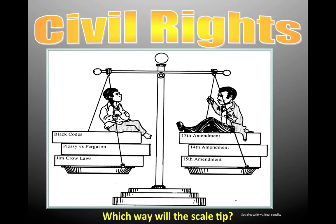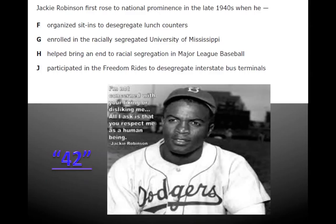Civil rights — big topic. You already know half of it. Here again you have this scale, which you've seen before from the first semester. On one side: Black codes, Plessy versus Ferguson, separate but equal, and Jim Crow laws — that's the bad side. On the other side: the 13th, 14th, and 15th Amendments — free, citizens, vote. Which way will the scale tip? We're going to talk about a lot of people.